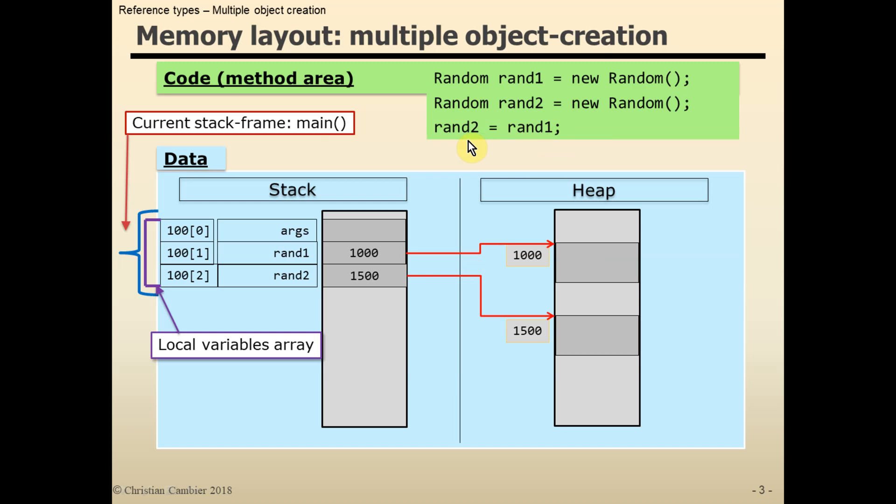In this case, we read the content of the variable located at the right-hand side of the assignment operator, reference variable rand1. Its content is 1000, the address of our first random object.